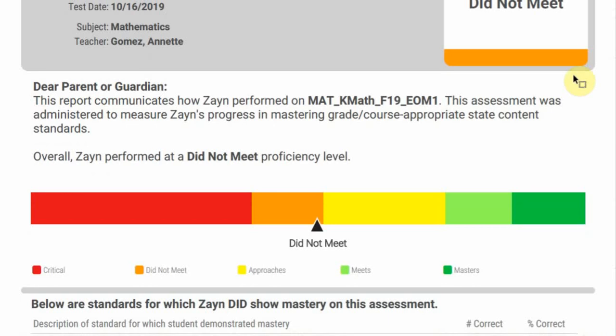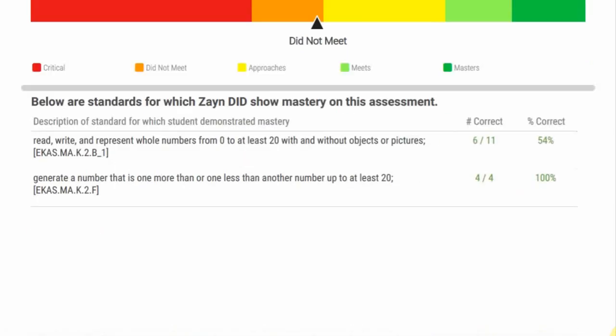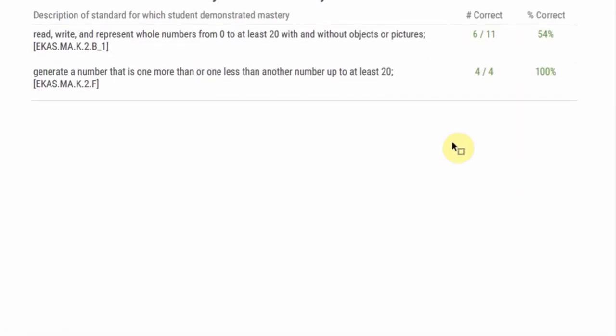For example, this student that did not meet, that would be considered like a D. And so this student, it'll show what they did show mastery. So 6 out of 11 were correct. So they did show mastery in this way by having 54 percent.